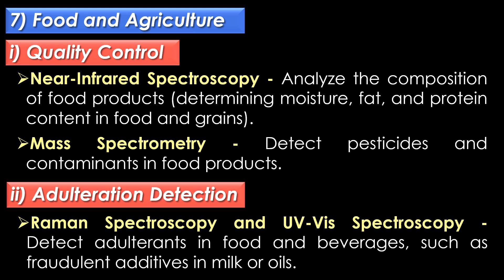In food and agriculture, spectroscopy is very helpful for quality control and adulteration detection. In quality control, near infrared spectroscopy is used to analyze the composition of food products such as determining moisture, fat and protein content in food and grains.